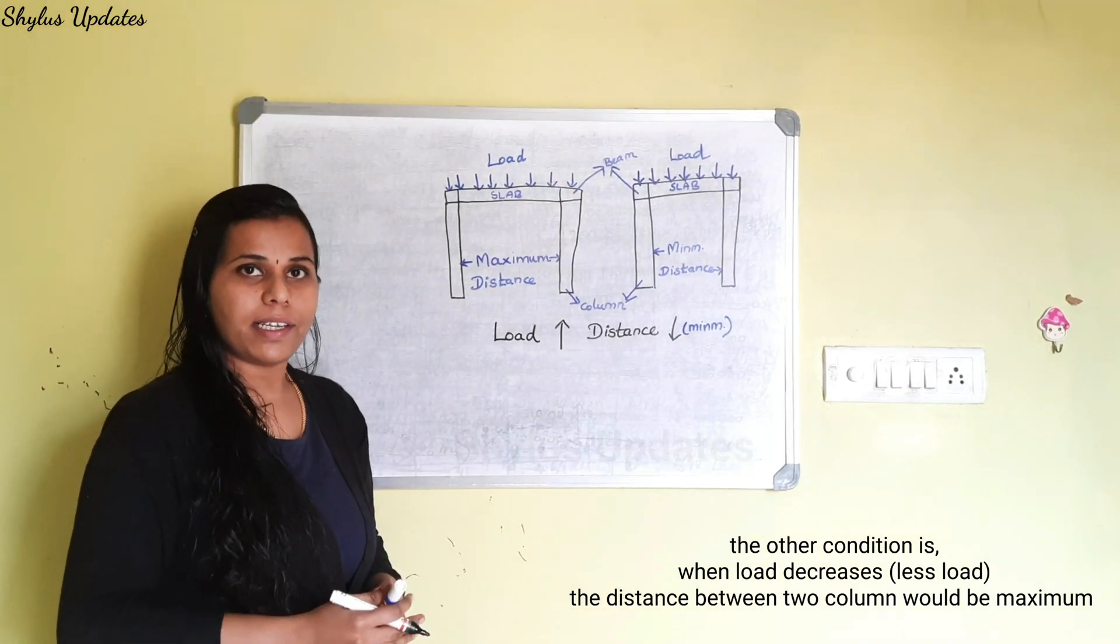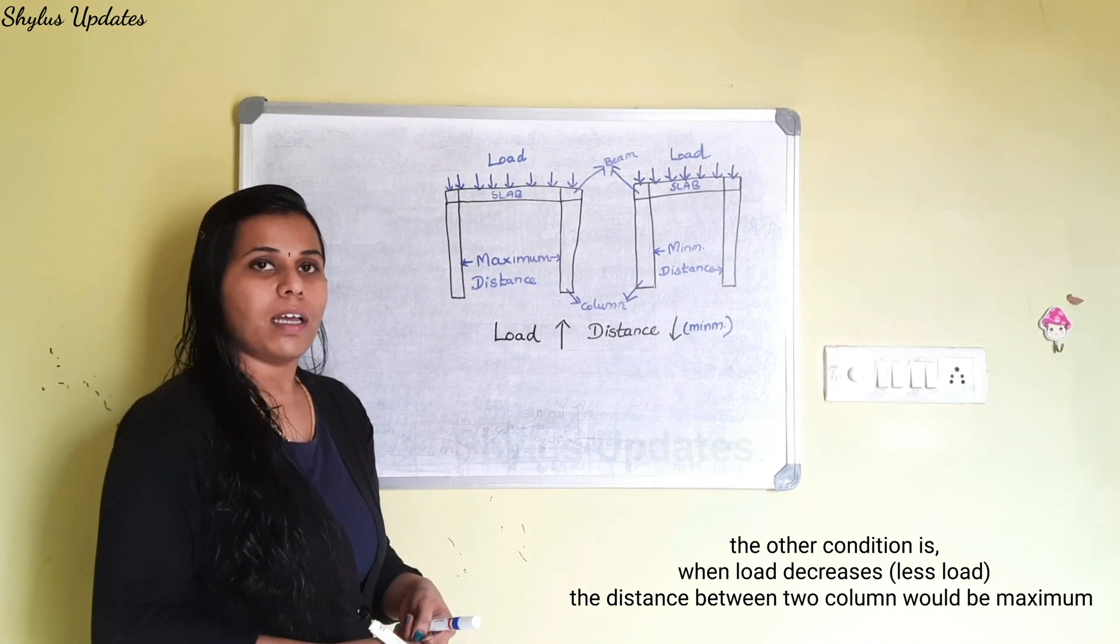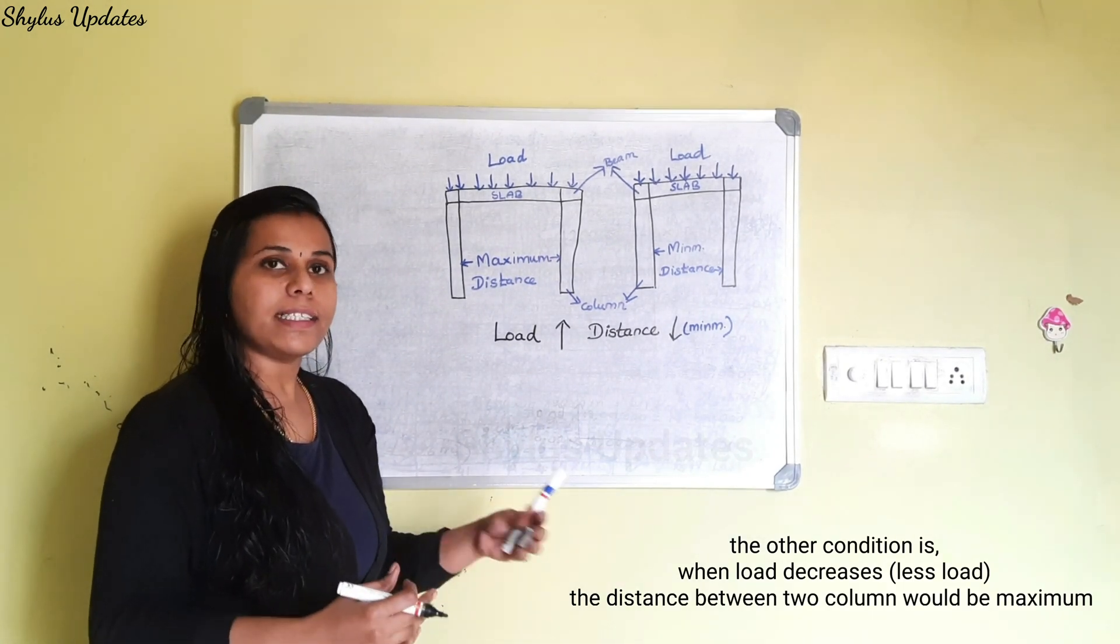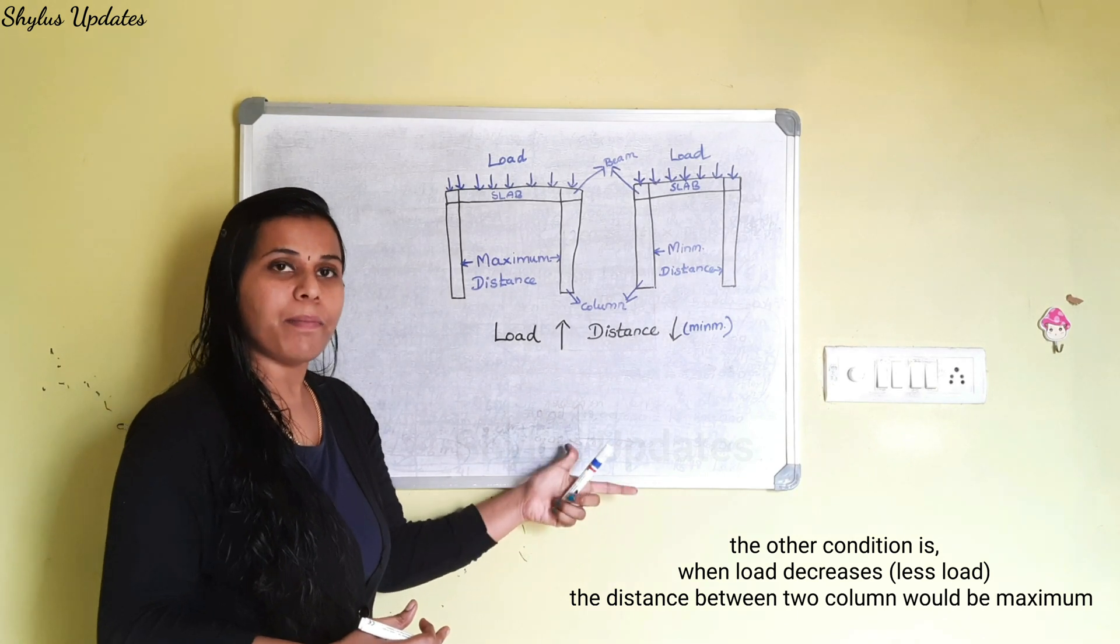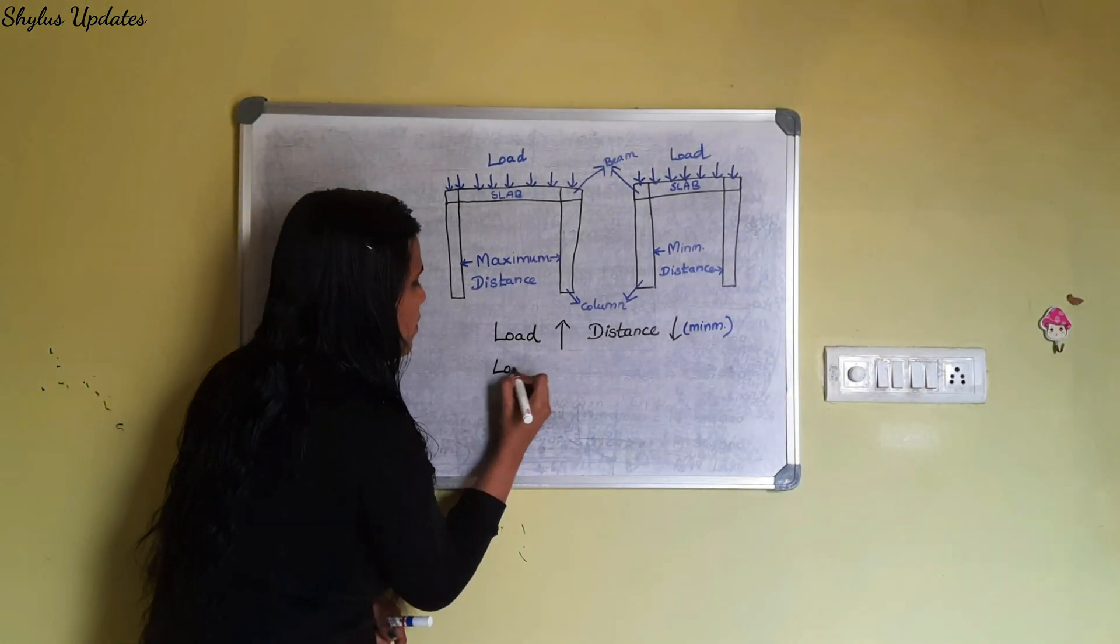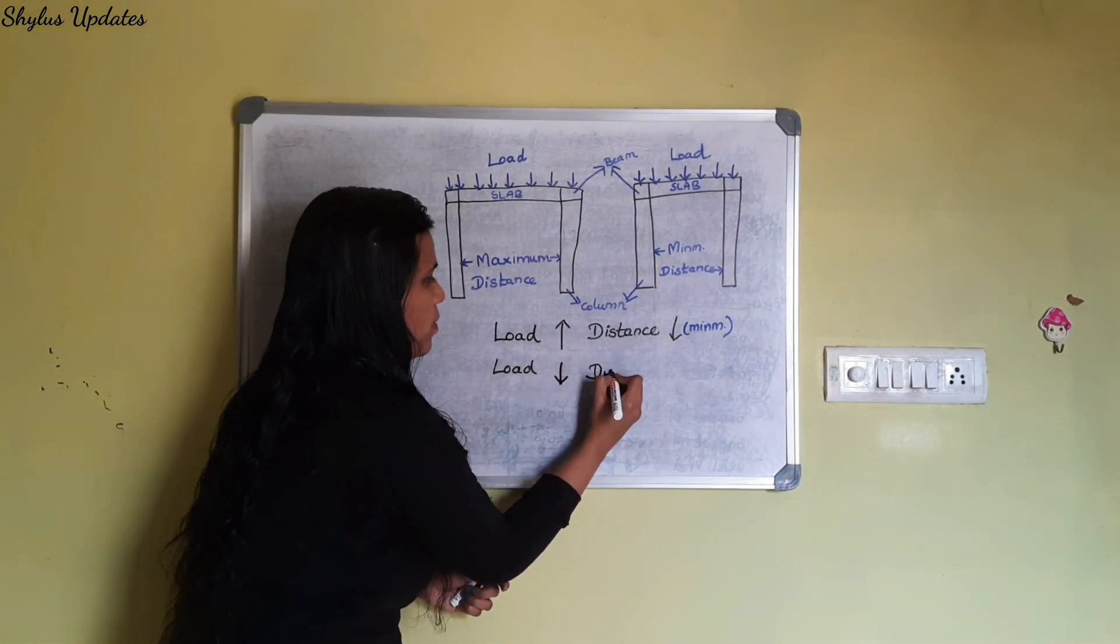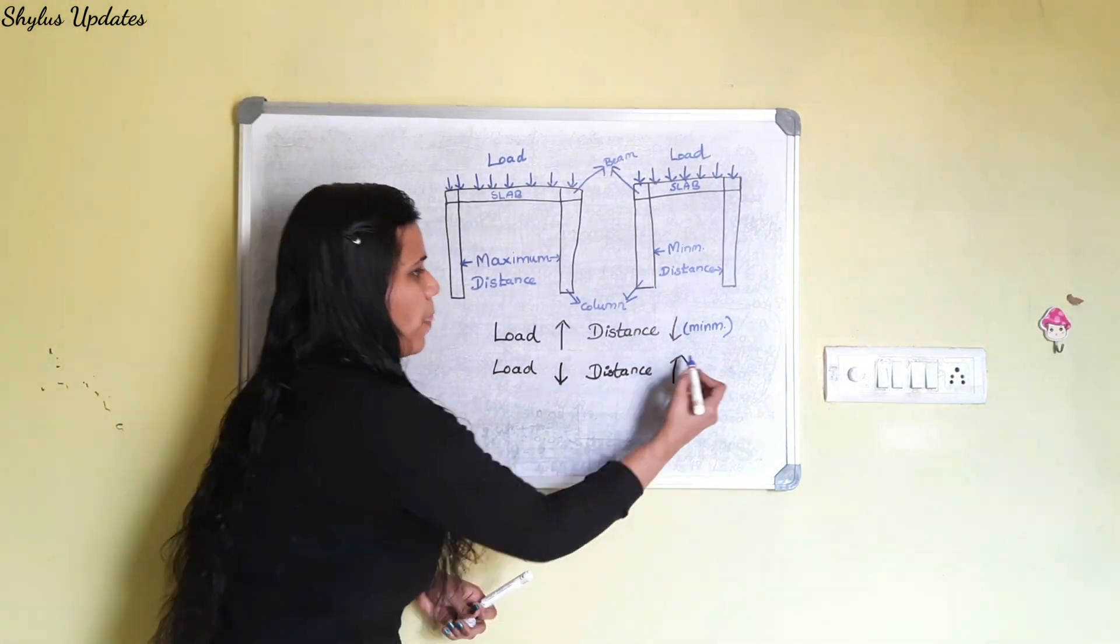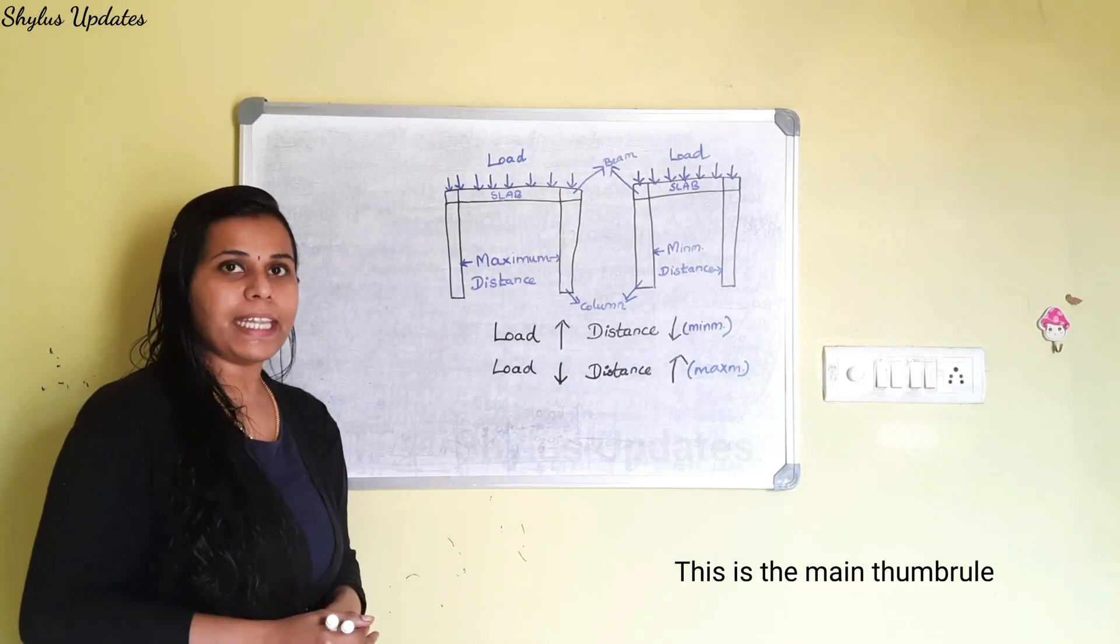The other condition is when load decreases, that is when load is less, the distance between two columns will be maximum. This is the main thumb rule.